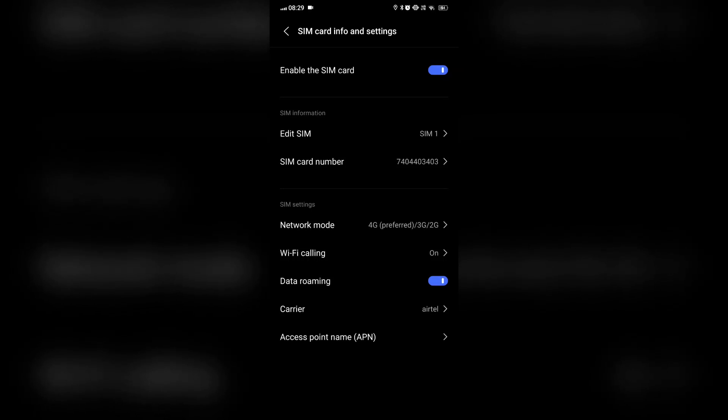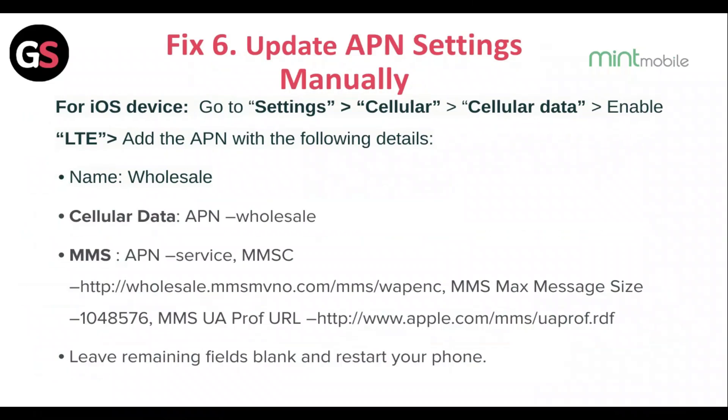Fix 6: Update the APN settings manually. For iOS devices, go to Settings then Cellular, then Cellular Data, enable LTE, and add the APN with the required details, leaving the remaining fields blank, and restart your phone.